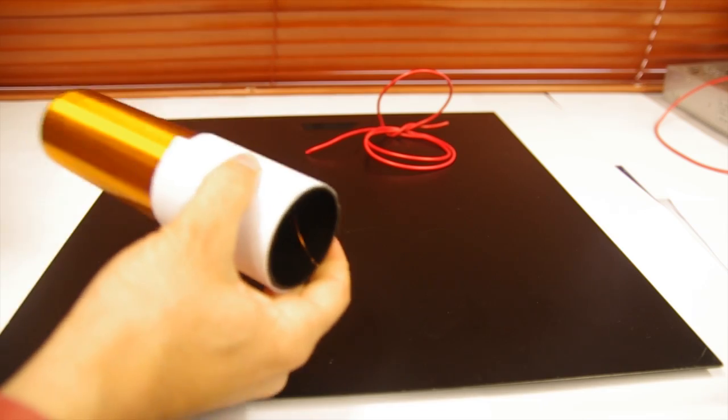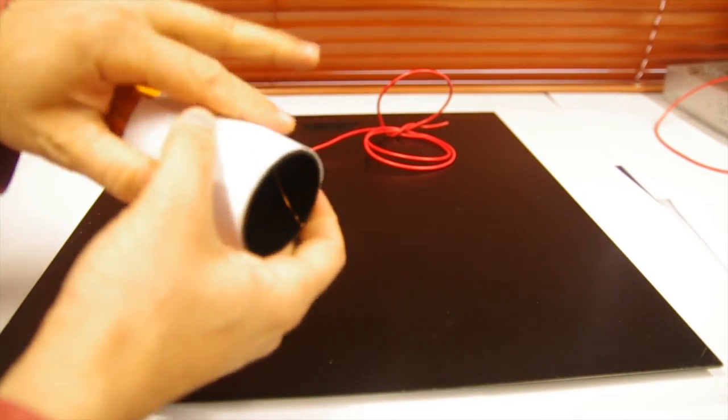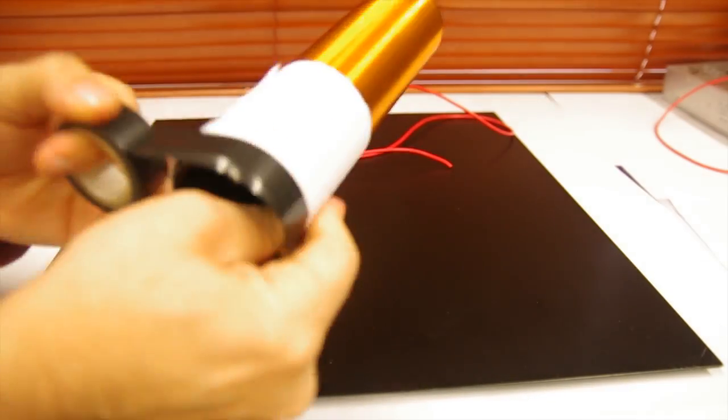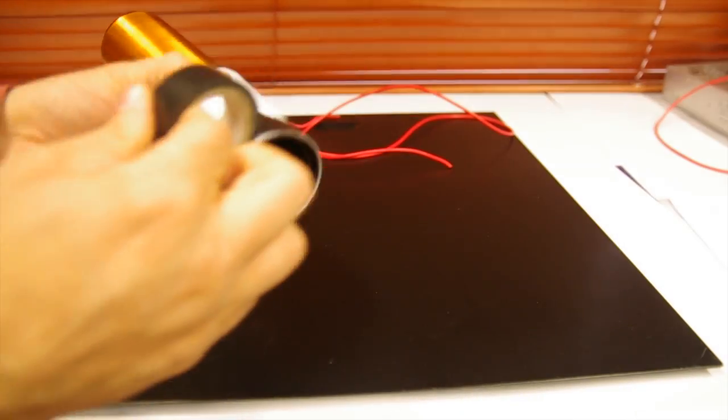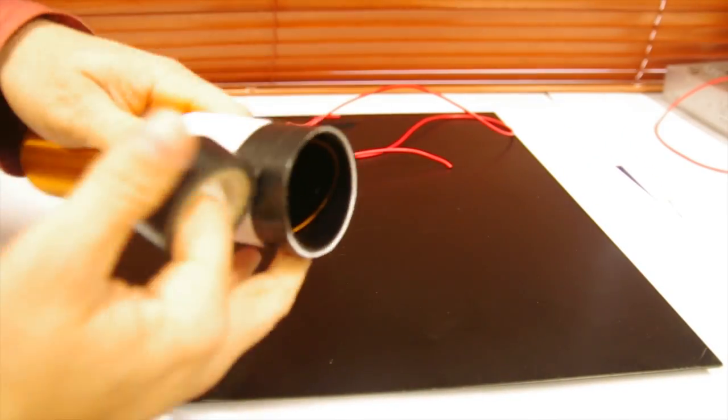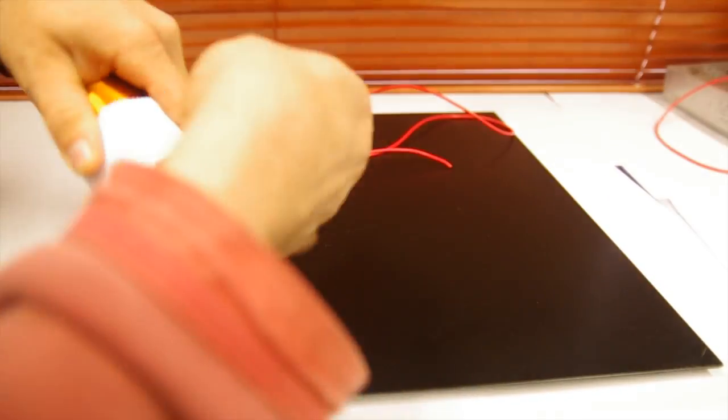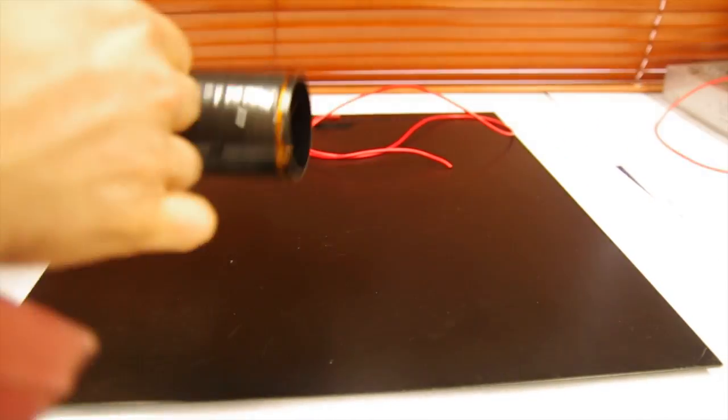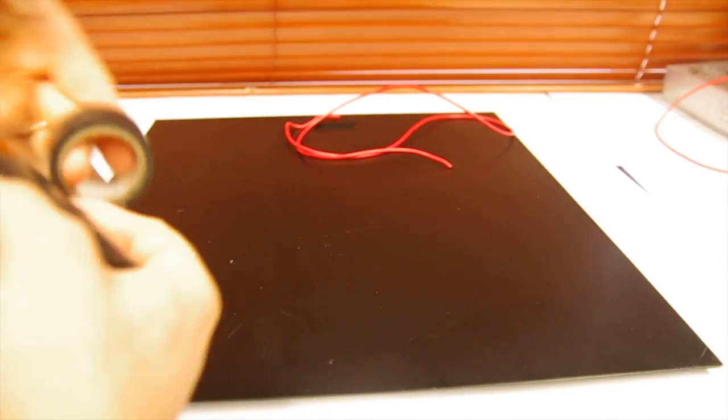Here you can see I'm wrapping some paper on the bottom just to protect the secondary coil from the primary coil. I'm then wrapping it in insulation just to protect it even further and to keep it fixed on the bottom of the helical coil.